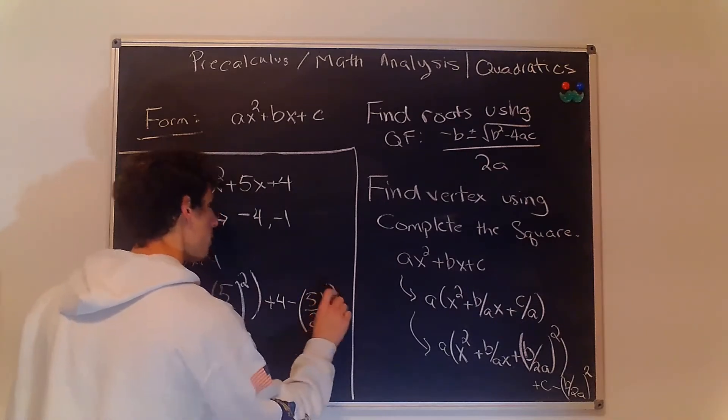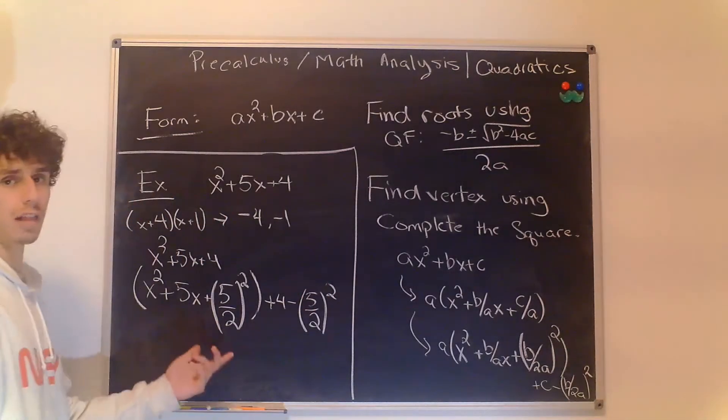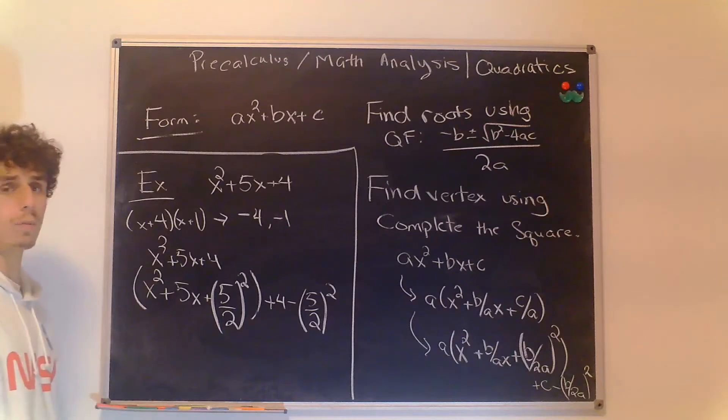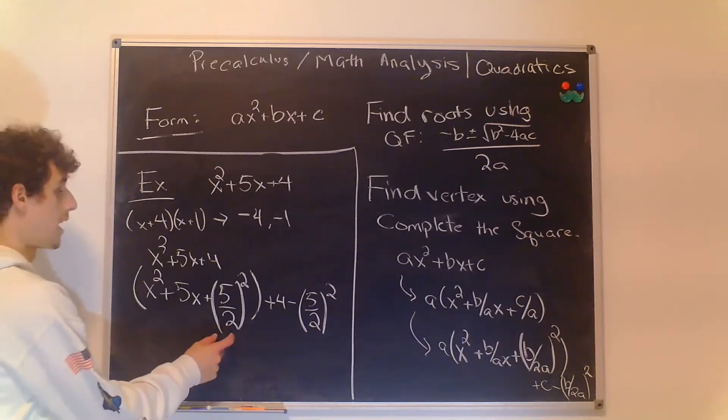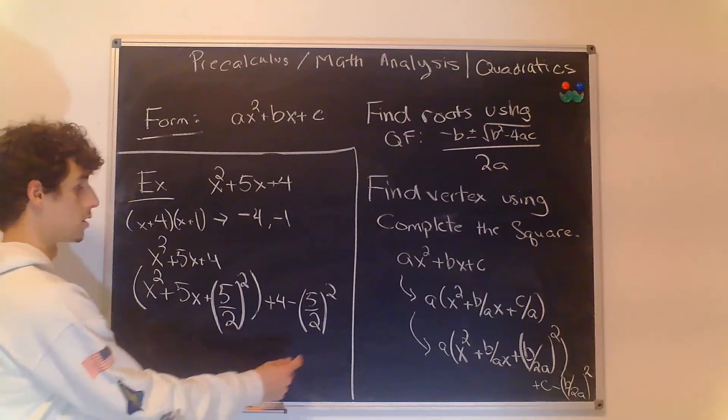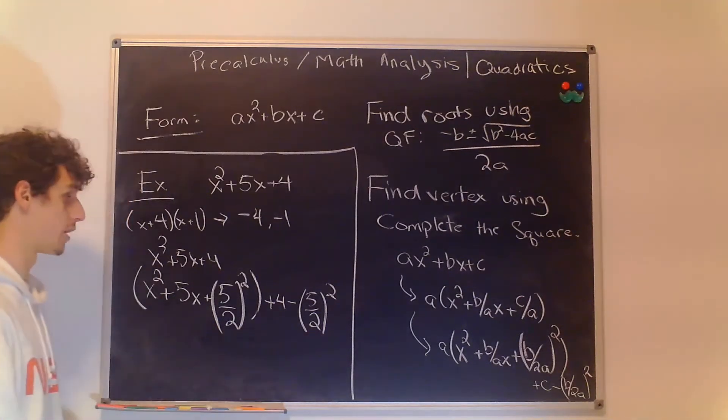And you might say well why are we just allowed to add stuff to our polynomial and that's because we're adding 0 in essence because we're adding (5/2)² here and subtracting (5/2)² out here.